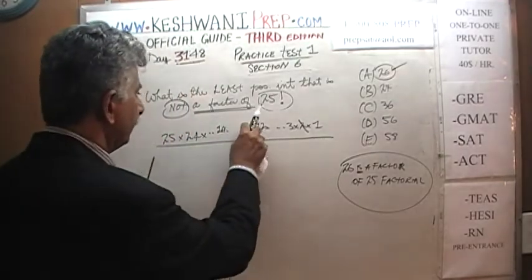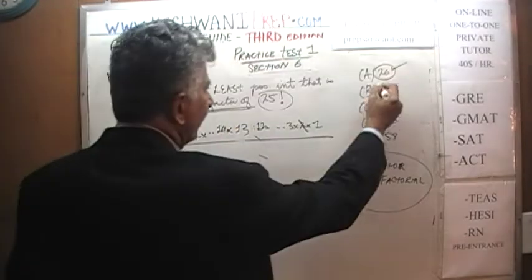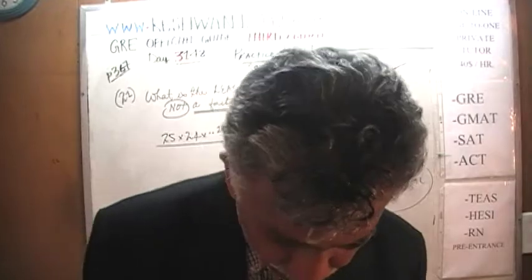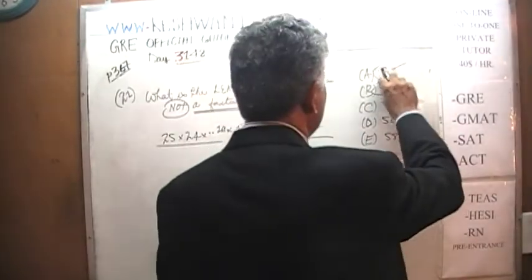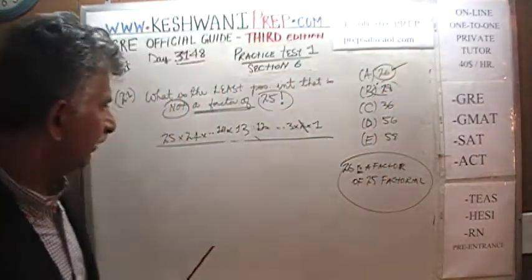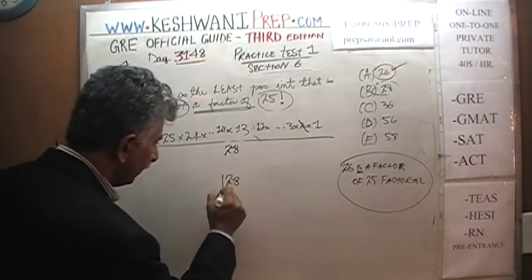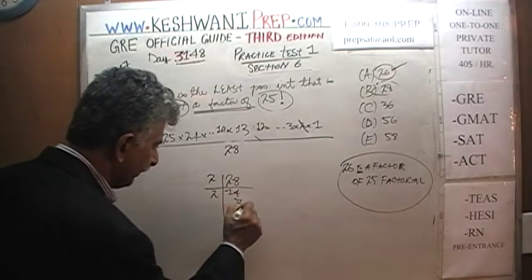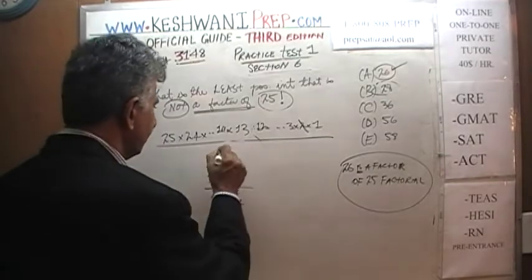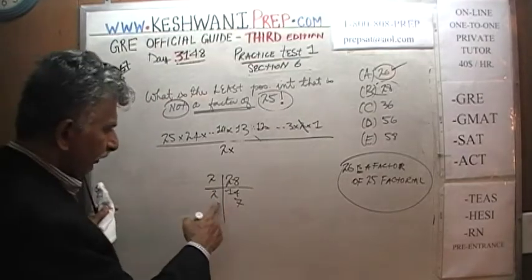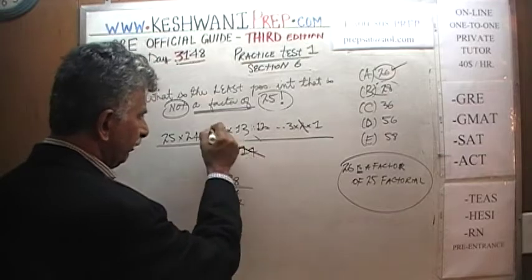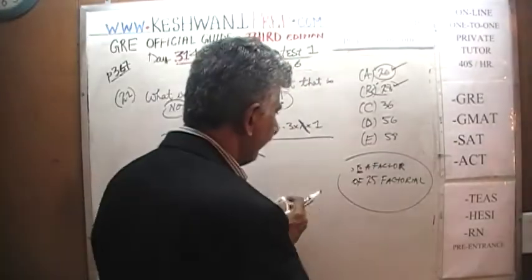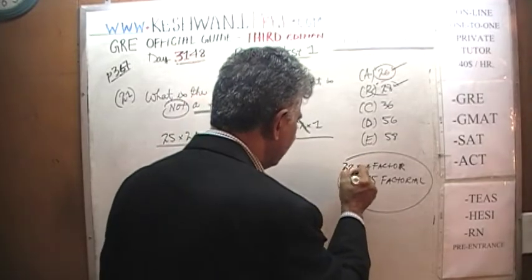Let's try 28. How can we break up 28 into its prime factors? 28 is essentially 2 times 14 — I noticed a 14 right there in the factorial. So that 14 will cancel with that 14, and this 2 will cancel with that 2. It turns out that 28 is also a factor of 25 factorial.